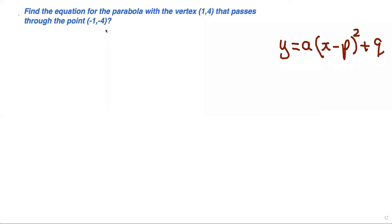Here's a question: find the equation of the parabola with vertex (1,4) that passes through the point (-1,-4).